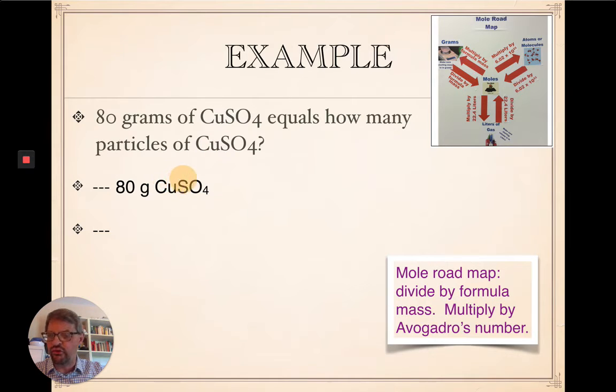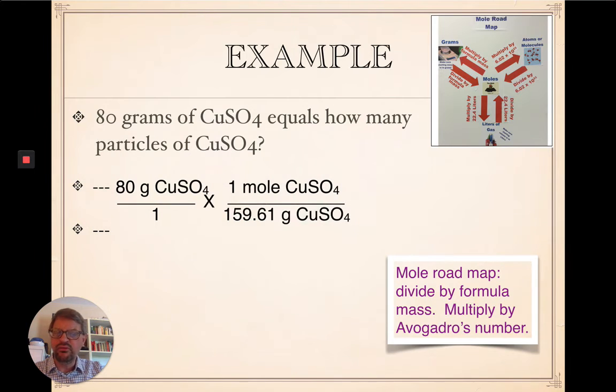Take a moment and calculate the formula mass of copper sulfate. One copper, one sulfur, four oxygen. Okay. So, the first part looks like this. Formula mass of copper sulfate, 159.61. That's one mole of copper sulfate.